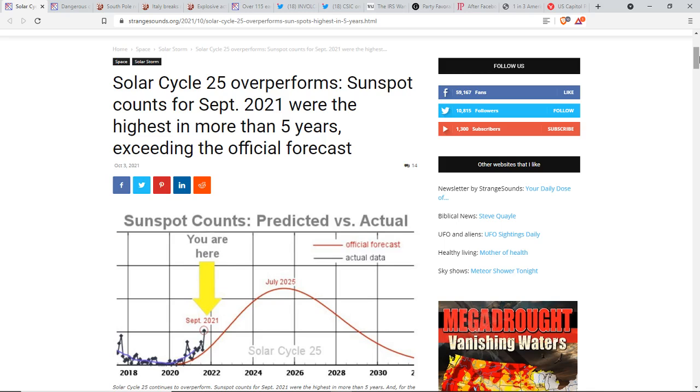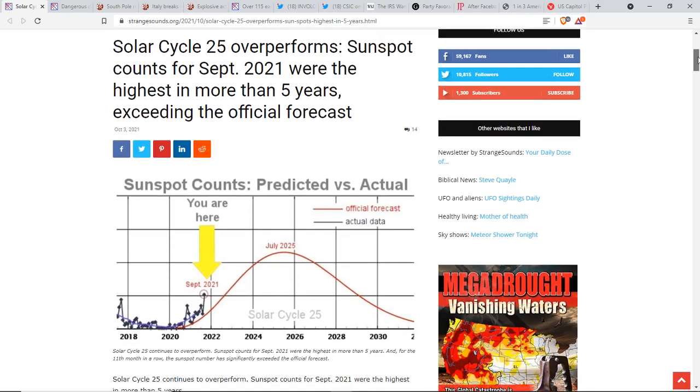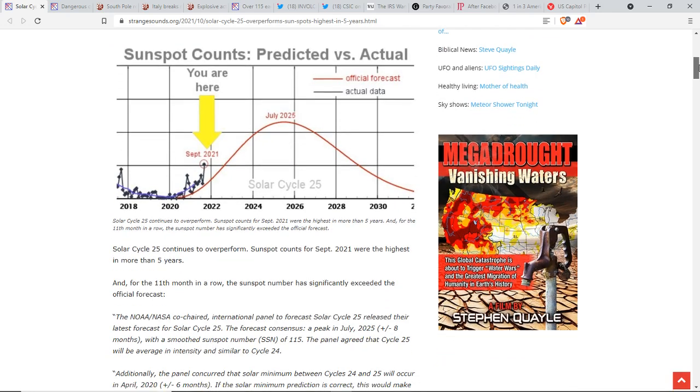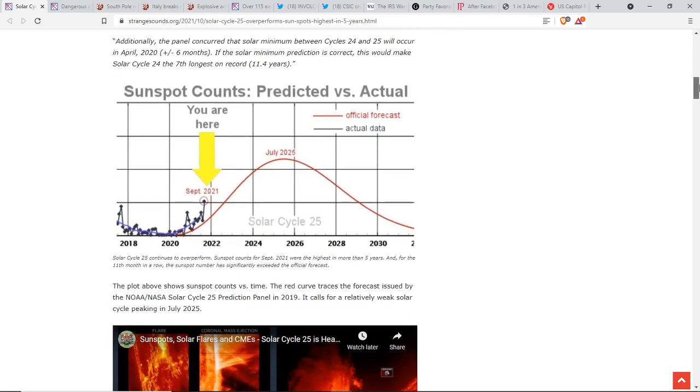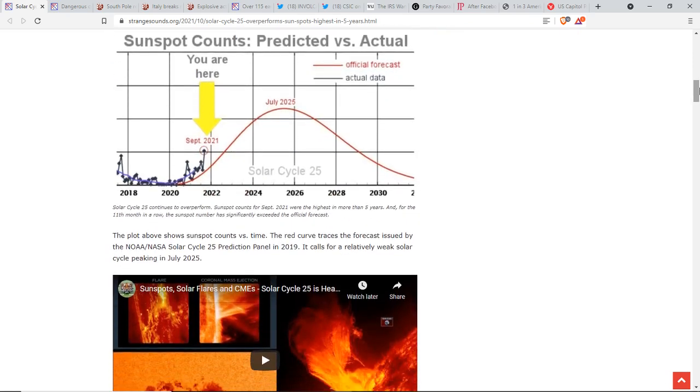Solar cycle 25 is way over-performing predictions. So let me just throw it out there for you guys. What do you think of that? That solar cycle 25 is way over-performing. Sunspot counts for September 2021 were the highest in more than five years, exceeding the official forecast. Wild swings, wild, wild swings. 11th month in a row, sunspot number has significantly exceeded the forecast. As you can see here. So curious, what do you guys make of that?